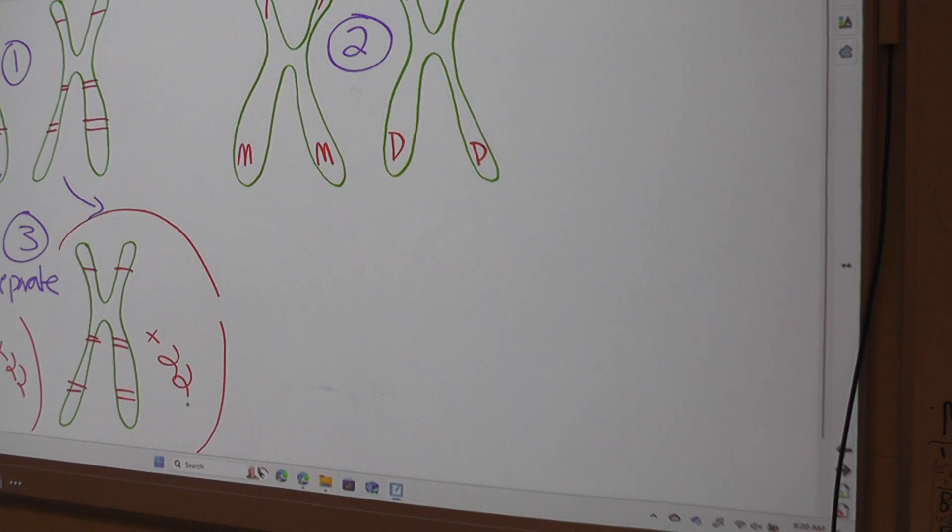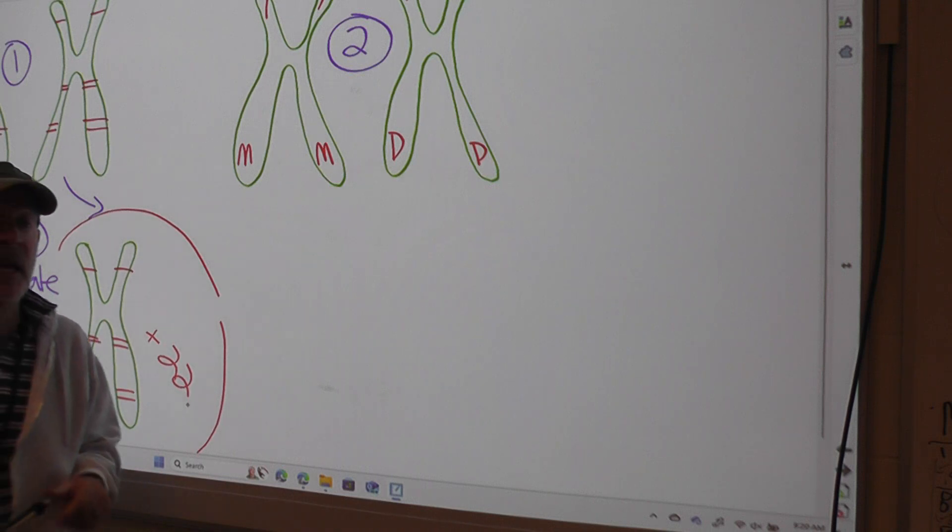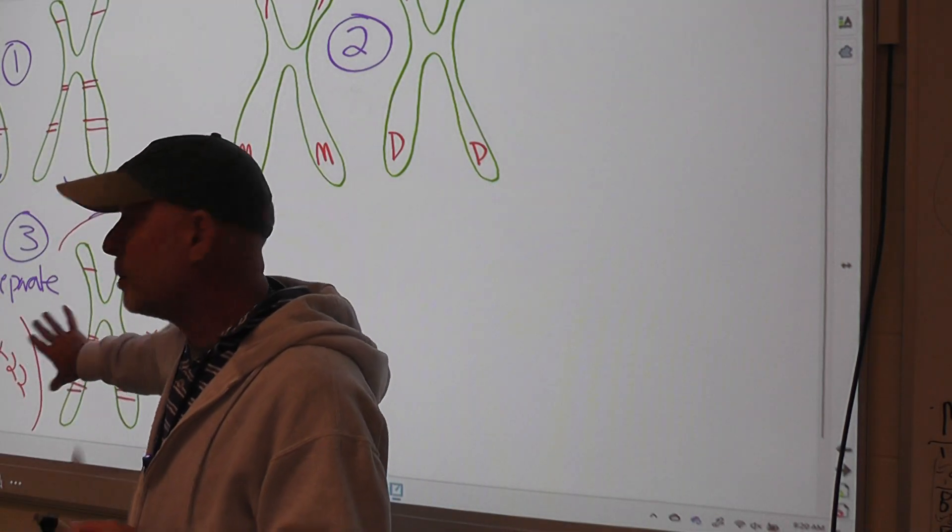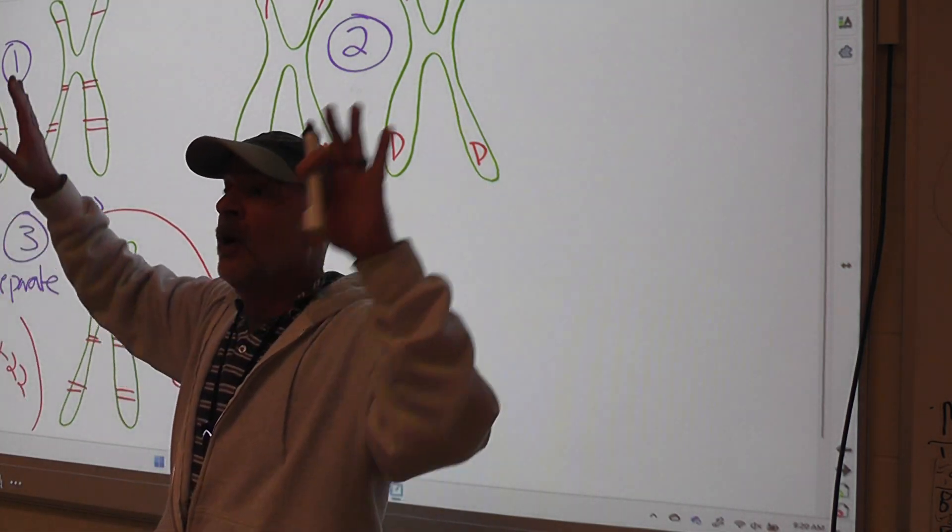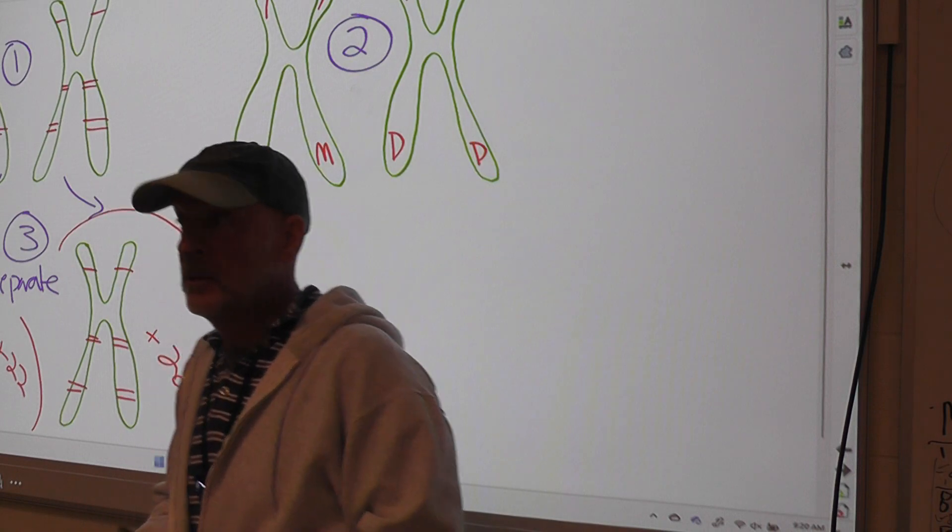So this will be one big cell with 22 of these pieces of paper in it. You won't know what's on the back. You'll know that this is chromosome number one, but you won't know whether this was moms or dads. At this point, you'll take a picture so you can see all those homologous chromosomes separated.